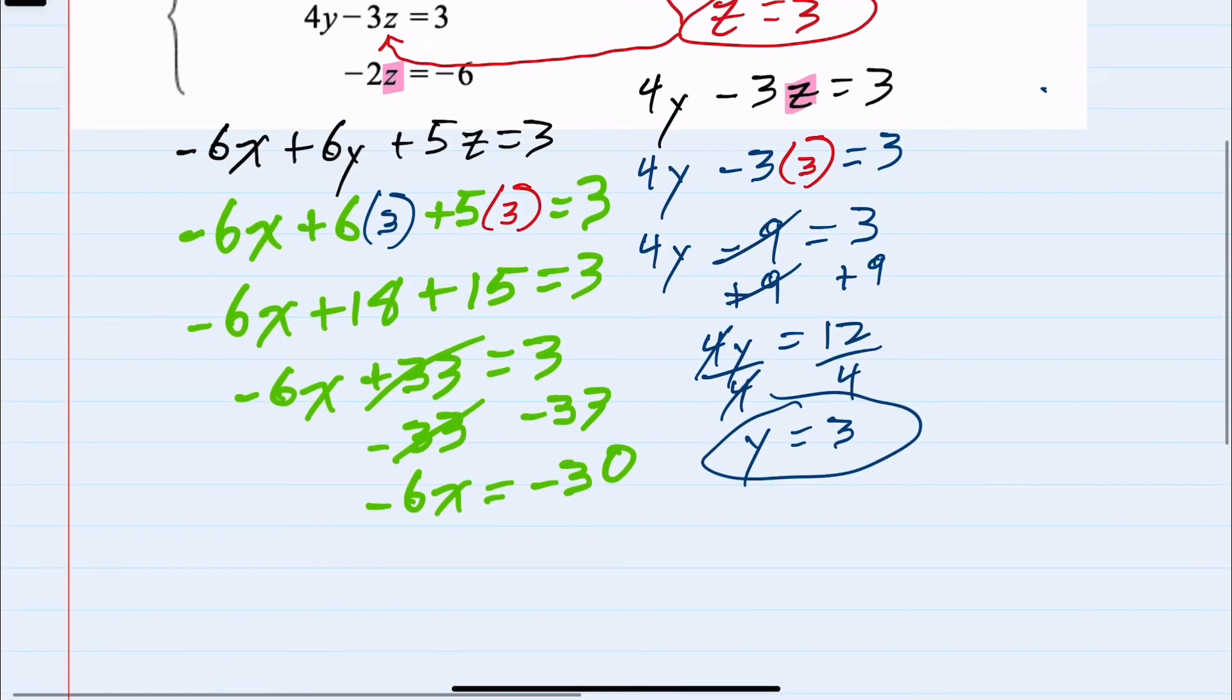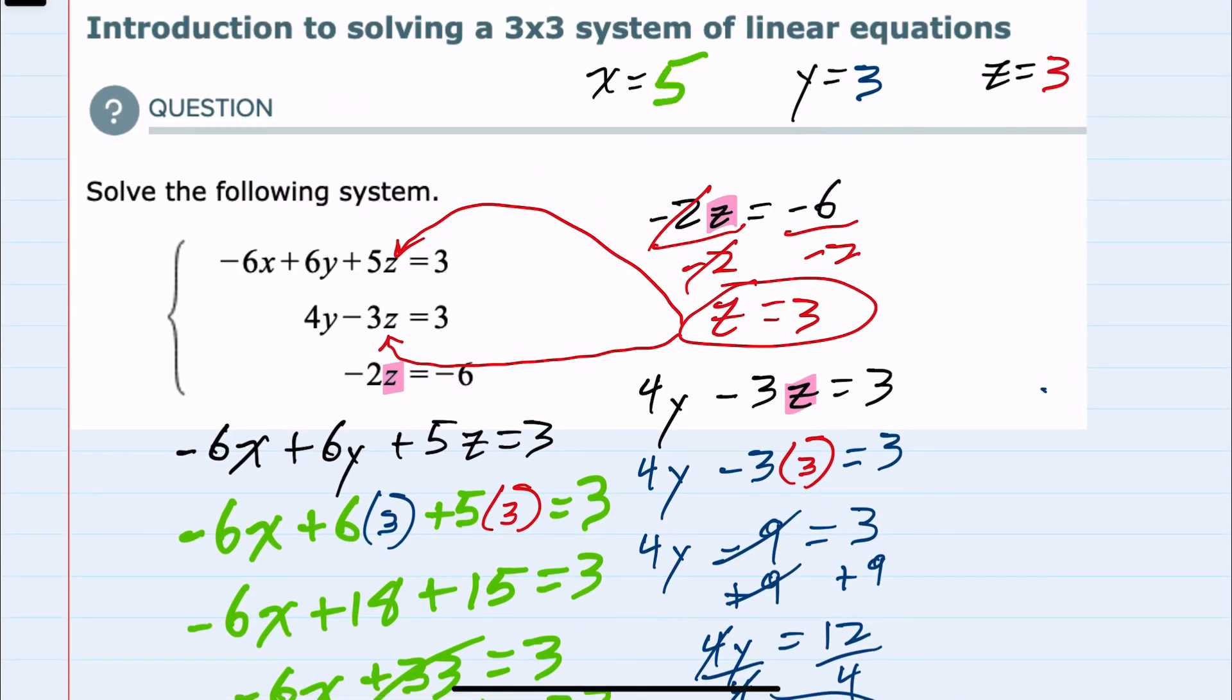And then solving for x, I would divide by negative 6 on both sides. Isolating the x, I have x equals 5 on the right-hand side. So now that we know x is 5, we have solved for all three of the variables.